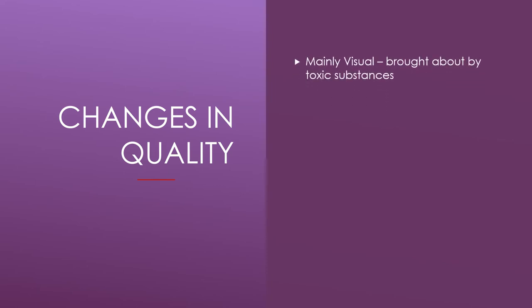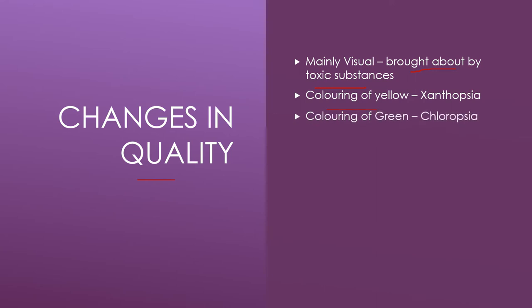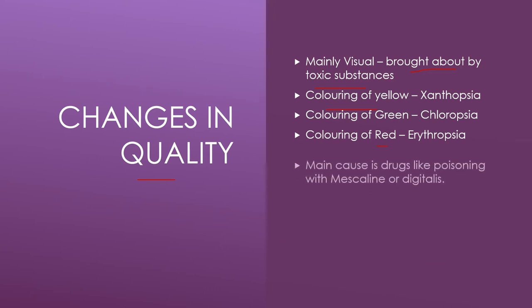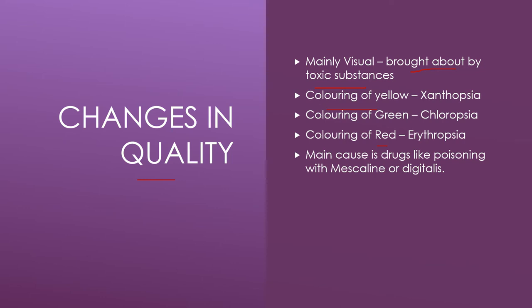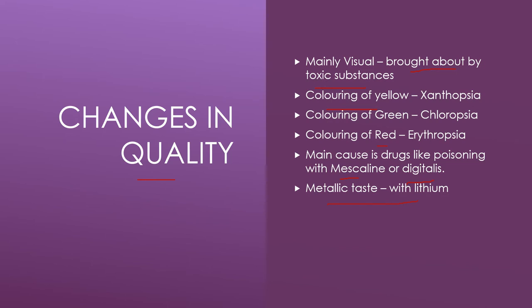What about changes in quality in perception? Mainly visual quality is affected, and this is caused mainly by toxic substances. Coloring can be yellow, which is called xanthopsia; green, called chloropsia; or red, called erythropsia. The main causes are drug poisoning — for example mescaline, or digitalis used in heart failure — where patients complain of seeing yellow, red, or green. A metallic taste can happen in people who take medications like lithium or metoclopramide.